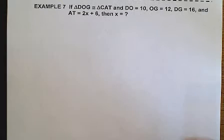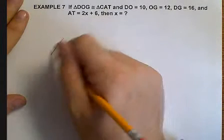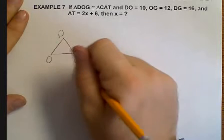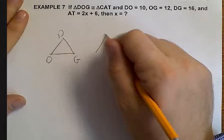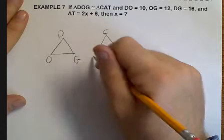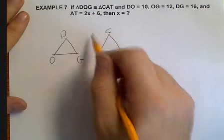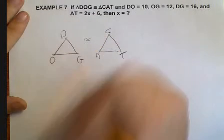Now, our last example. We've got two triangles. We've got DOG. And, we've got CAT. And, they tell us that they are congruent.